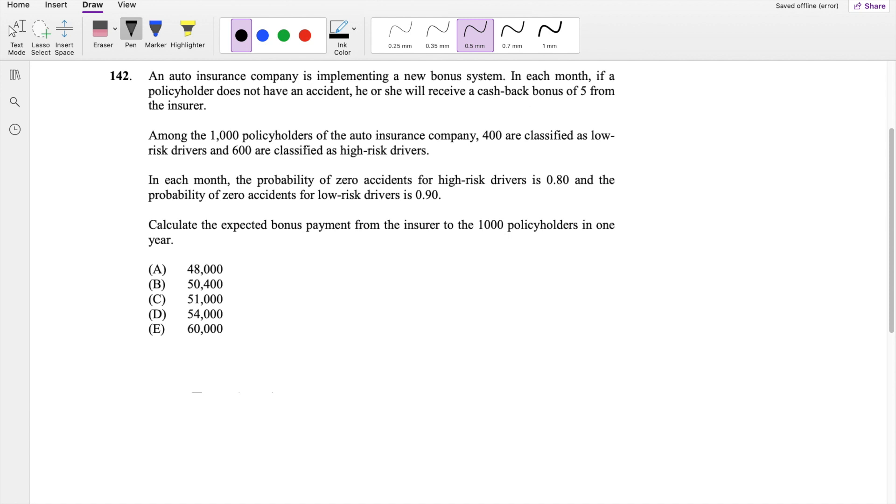So they're saying, in each month, if the policyholder does not have an accident, he or she will receive a cashback bonus of $5. And they're saying, among the 1,000 policyholders, 400 are low risk and 600 are high risk.